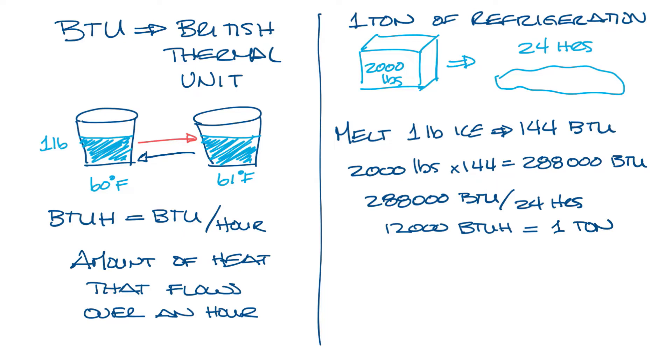Since there are 12,000 BTUs in a ton, a three-ton air conditioner is a 36,000 BTU unit. And if you know the BTUs in tons, you can kind of estimate the airflow in CFM that you would need to offset this load.